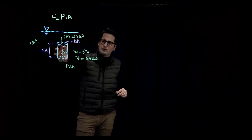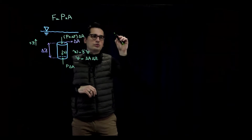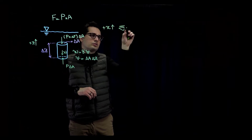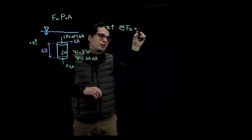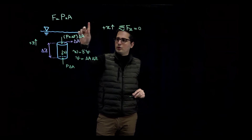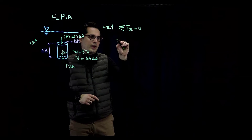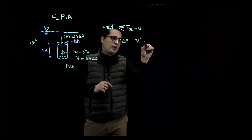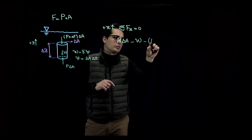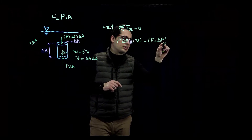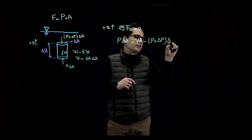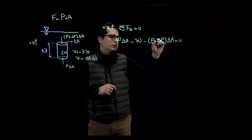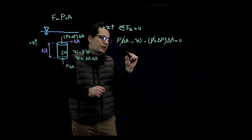These are all the forces acting on this fluid element. Now let's write the equilibrium. With z positive upward, the summation of forces in the z-direction equals zero. Upward forces are positive and downward forces are negative. So we have: P times delta A (positive), minus W (negative), minus the quantity P plus delta P times delta A equals zero. The P times delta A terms cancel out.